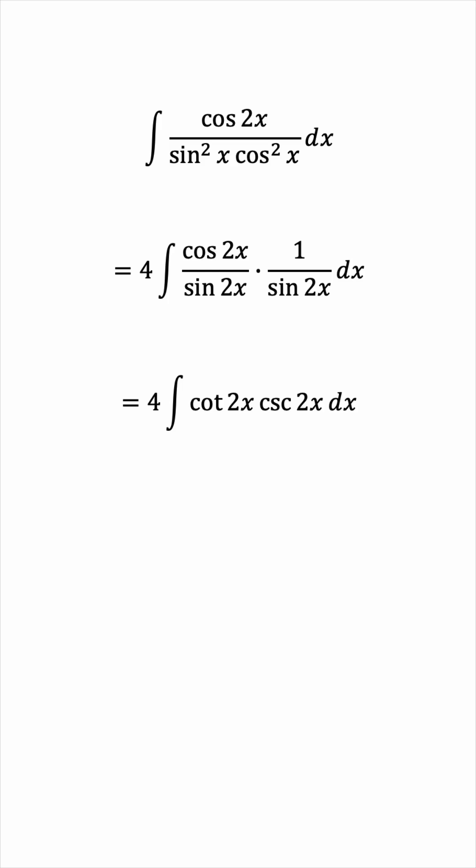And this also has a known antiderivative, except that the input is 2x instead of x. So we have to use the chain rule in reverse, and divide by 2. But the antiderivative of cosecant cotangent is negative cosecant. The answer simplifies to negative 2 cosecant 2x plus c.